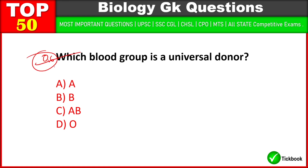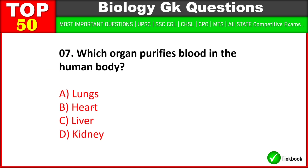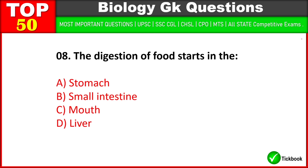Which blood group is a universal donor? D is the right answer: O. Which organ purifies blood in the human body? D is the right answer: kidney. The digestion of food starts in the mouth — C is the right answer.